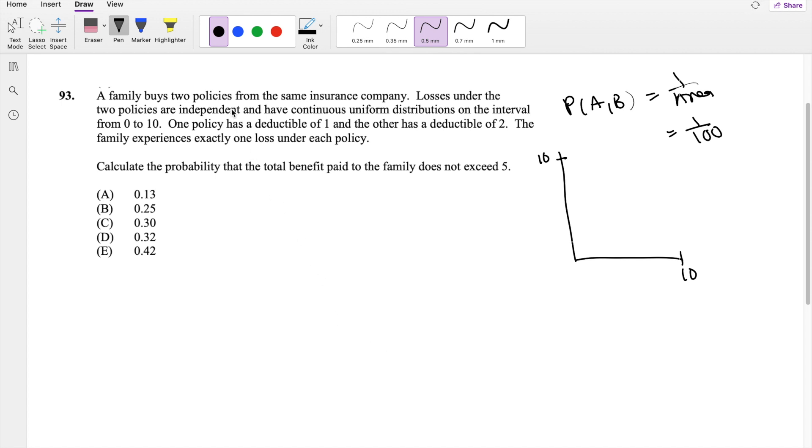And one policy, I'm going to call that policy A, has a deductible of 1. So I'm going to call Y the payment. So then X is the loss. So then the payment of A is equal to X, which is the loss, minus 1.